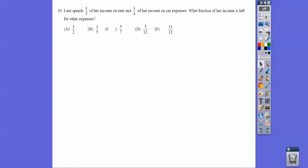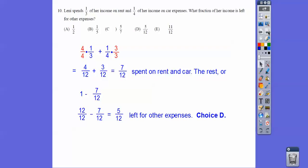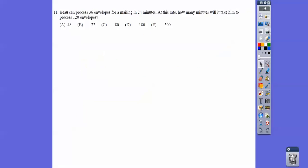All right, Lenny spent one-third of her income on rent and one-fourth of her income on car expenses. What fraction of her income is left for other expenses? We have to add those together. Before we add, we've got to get a common denominator of 12. So four-twelfths plus three-twelfths is seven-twelfths. The rest of her money is the rest of the twelfths. So 12-twelfths minus seven-twelfths is five-twelfths, choice D.